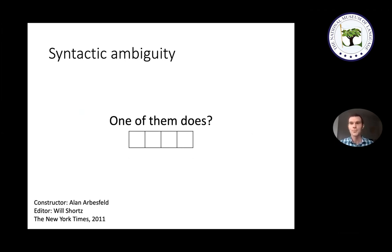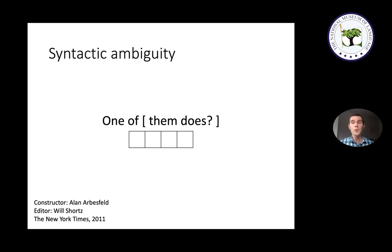Another especially tricky syntactic ambiguity clue is 'one of them does.' The most natural parse treats 'one of them' as a single phrase, but the correct answer requires bracketing 'them does' as a unit. You also have to reinterpret both words: 'them' is the colloquial form of 'those,' as in 'there's gold in them hills,' and 'does' is not the verb but the noun — female deer. So the clue is really saying 'one of those does,' and the answer is DEER.